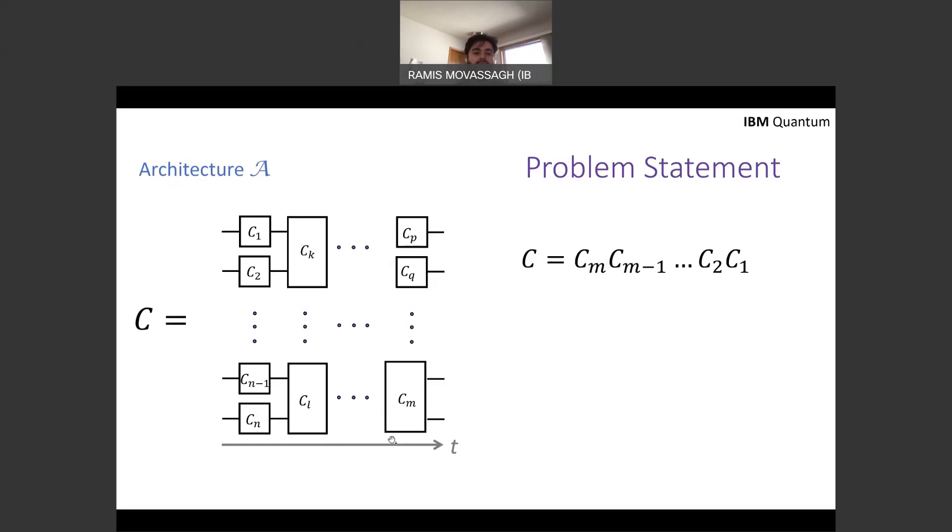Now we say a quantum circuit is random, fully random. We actually call it Haar random with respect to the architecture A, if every one of the gates is independently drawn with respect to Haar measure from the space of unitaries. Gates are unitary always, so uniformly at random you pick each one of the gates independently.